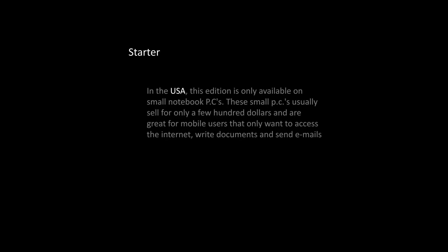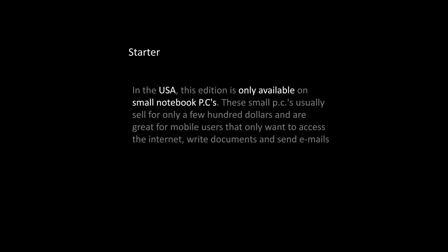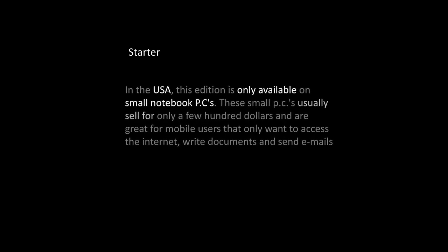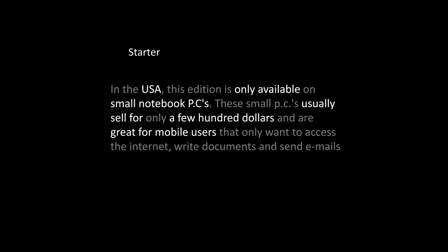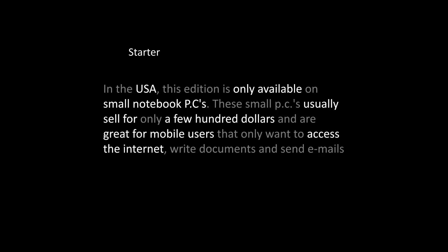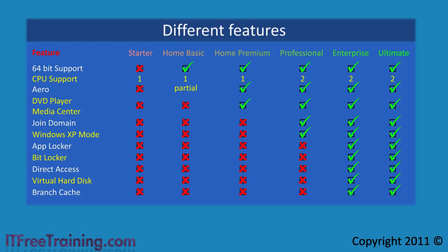The first edition is the Starter edition. In the USA, this edition is only available on small notebook PCs. These small PCs usually sell for only a few hundred dollars and are great for mobile users who only want to access the internet, write documents, and send emails. The Starter edition is the only edition of Windows 7 that does not support 64 bit processors. Graphical applications such as DVD support and the Aero interface are not included.